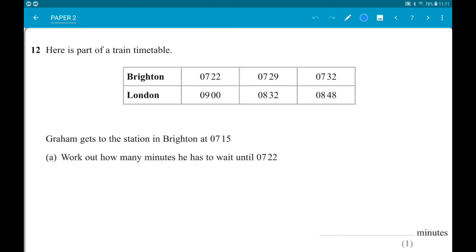Number 12: Here is part of a train timetable between Brighton and London. Graham gets to the station in Brighton at 7:15. Work out how many minutes he will wait until 7:22. Twenty-two minus fifteen is seven minutes.